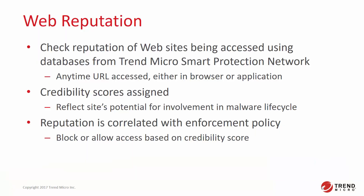Deep Security uses databases from the Trend Micro Smart Protection Network to check the reputation of websites being accessed. The databases include references to sites collected from a variety of sources, including URLs collected from malware analysis. Sites in the database are classified and assigned credibility scores that reflect their potential for infecting computers or their involvement in a malware or spyware lifecycle. Trend Micro products with Web Threat Protection enabled use these credibility scores to regulate access to the sites.